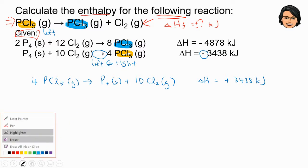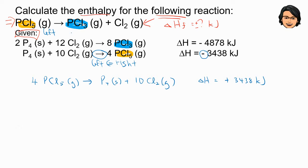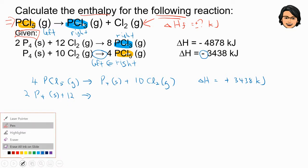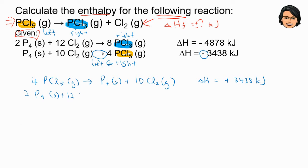From the final equation, PCL3, both of these equations, only one appears. And it is on the right-hand side for PCL3, and the given one is also on the right. So it means that I don't have to do anything about the equation. So I just copy 2P4. Remember, phase is very important. If you don't write down the phase, you cannot cancel anything. So 2P4 plus 12Cl2 gas, you will get 8PCL3 gas. Because you didn't reverse the equation, so it is still negative 4878 kilojoules.